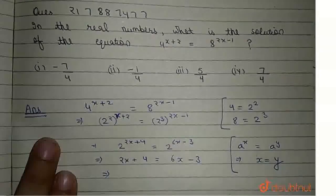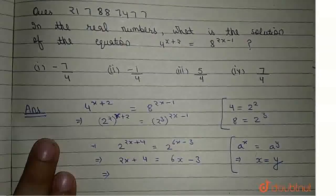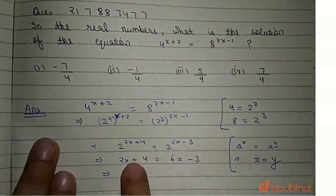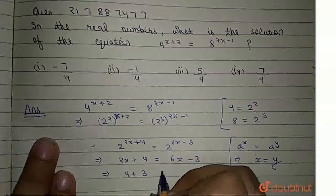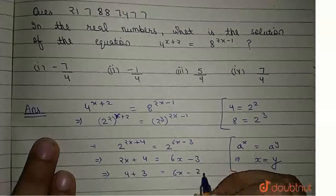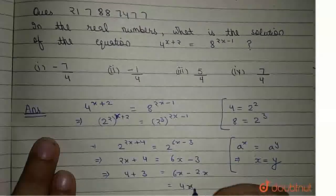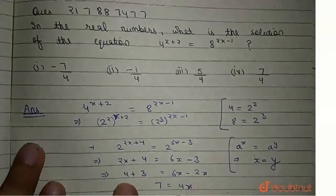Taking the constants on one side and the variables on the other, we get 4 + 3 = 6x - 2x, which is 4x = 7.